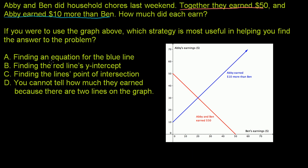So the first choice is finding an equation for the blue line. Let's look at this graph they've given us. The blue line here is the graph using the information that Abby earned $10 more than Ben.